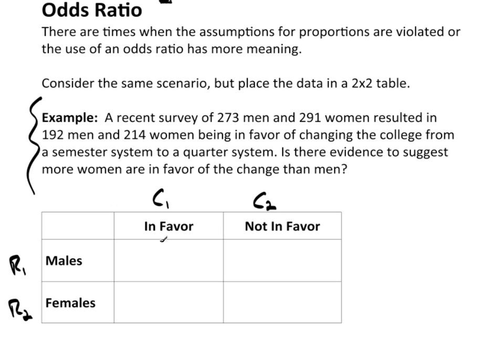So, how many males were in favor? Well, there are 192 men. How many women? There were 214 women. How many were not in favor? Well, if 192 of 273 were in favor, then 273 minus 192 were not in favor, and that was 81. So, for the females, this would be 291 minus 214, which will give me 77.